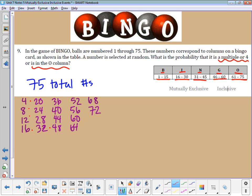Let's count how many there are. There's 18 multiples of 4. Next thing, I need to know what's in the O column. In the O column, I have 61 through 75, that's 15 numbers.